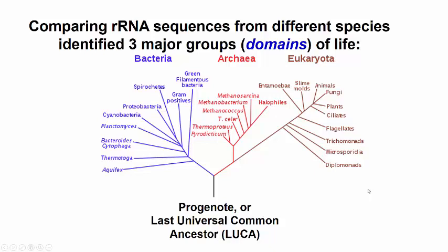One can even infer a reasonable base sequence for the small ribosomal RNA subunit for each of the ancestral species, including the progenote at the base of the tree.